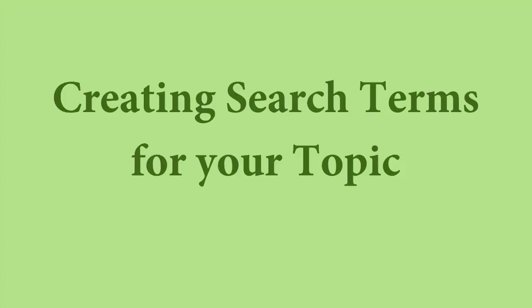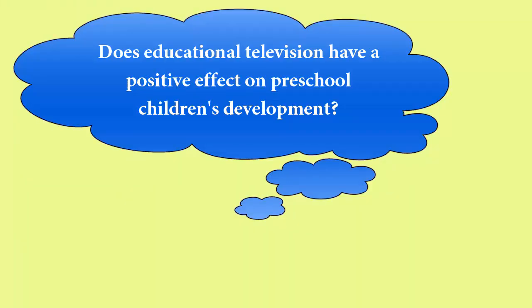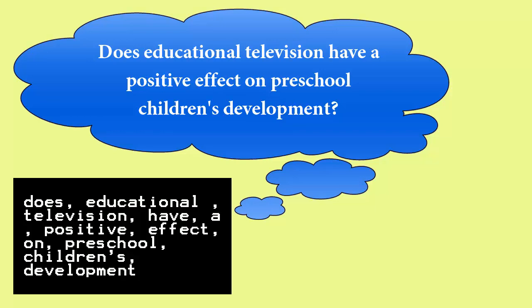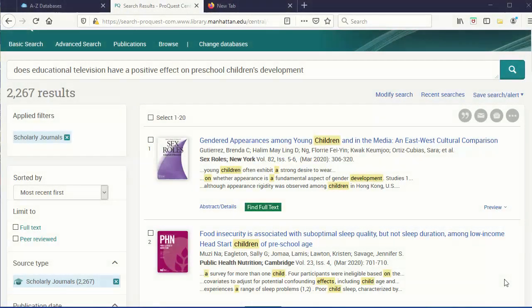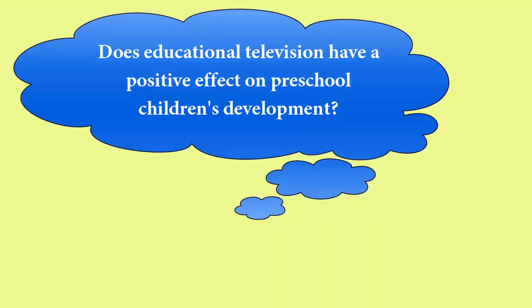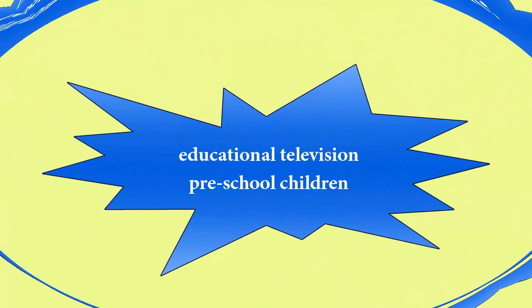Before you start to search, it can be useful to brainstorm search terms, including variations of the key terms in your topic. You can't search databases the way you would Google. Instead of putting in full sentences or questions, you need to boil down your topic to just the keywords. If I want to know if educational television has a positive effect on preschool children's development, I can't type that in as a question because the search engine will look for 'effect,' 'positive,' and other words that will appear in plenty of articles that aren't actually going to be useful to me. So instead, I have to reduce my question down to just the key terms and brainstorm from there.